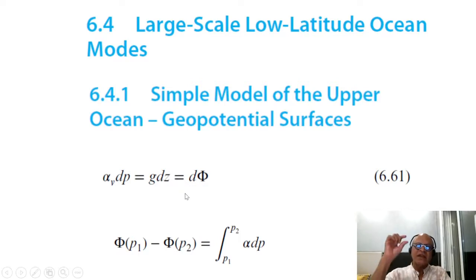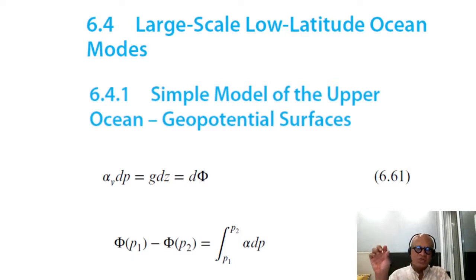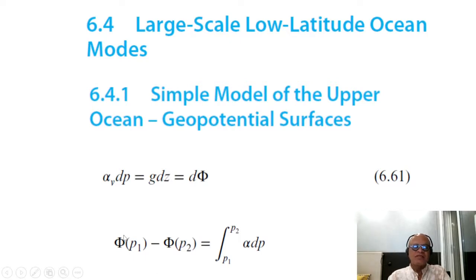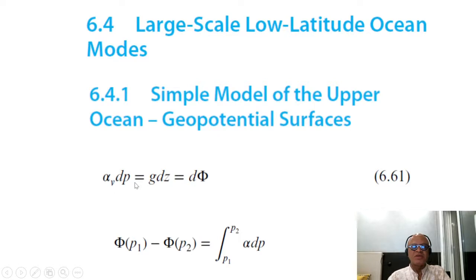When you have vertical stratification and multiple layers in the active ocean above the thermocline, you have isobars. For an incompressible flow you can remove the pressure effects. We will write φ(p1) minus φ(p2) as the integration between two isobars p1 and p2 of α dp — it's just the integration of the hydrostatic equation.